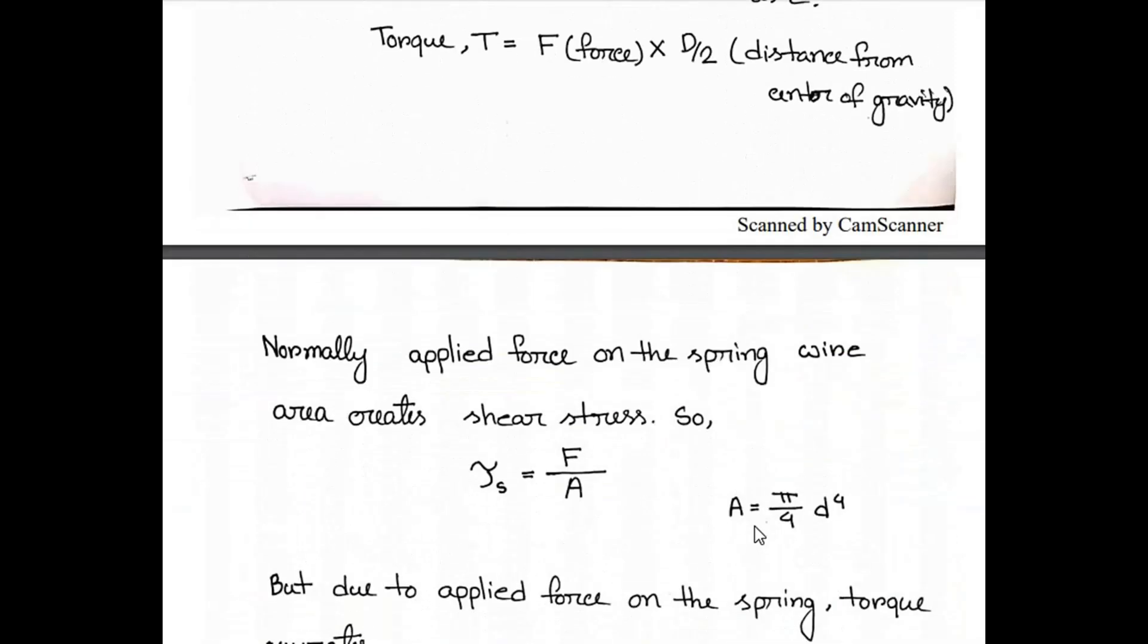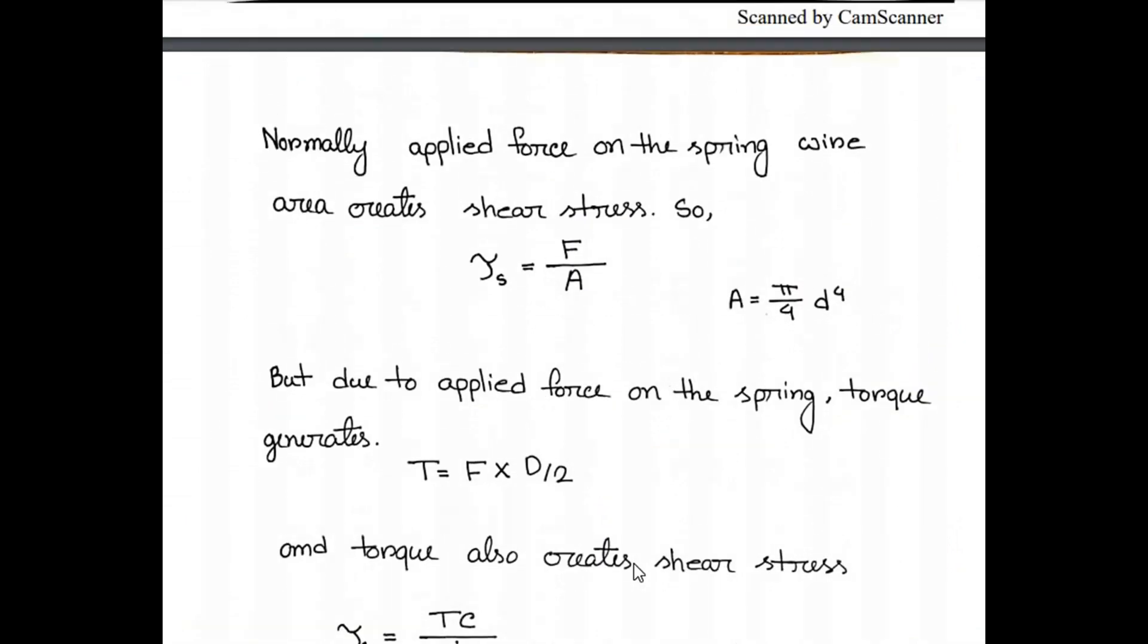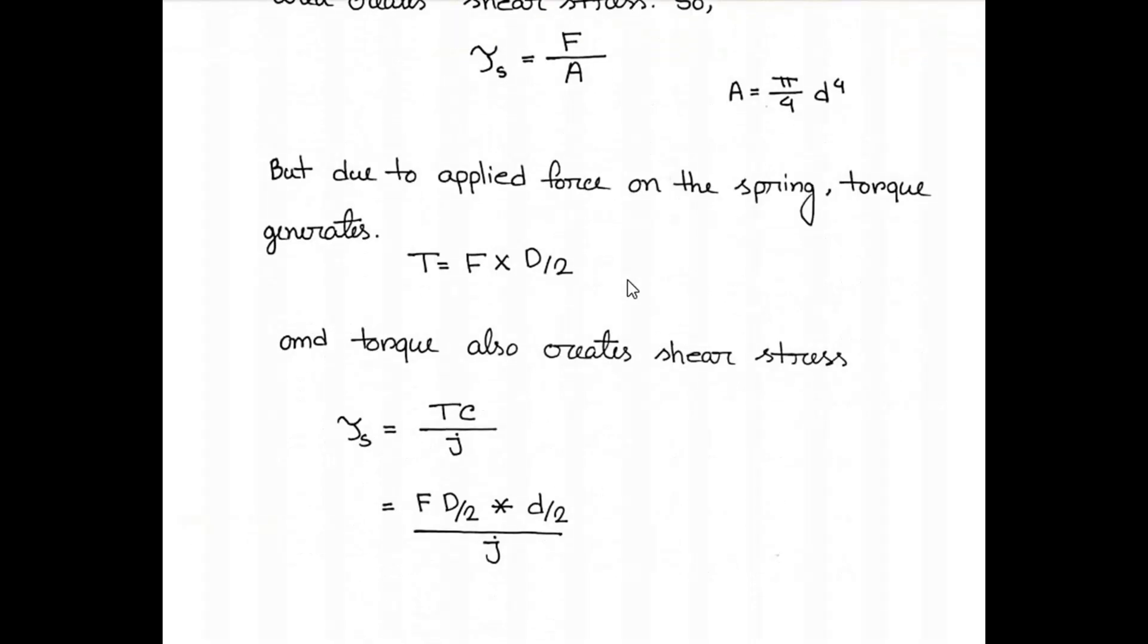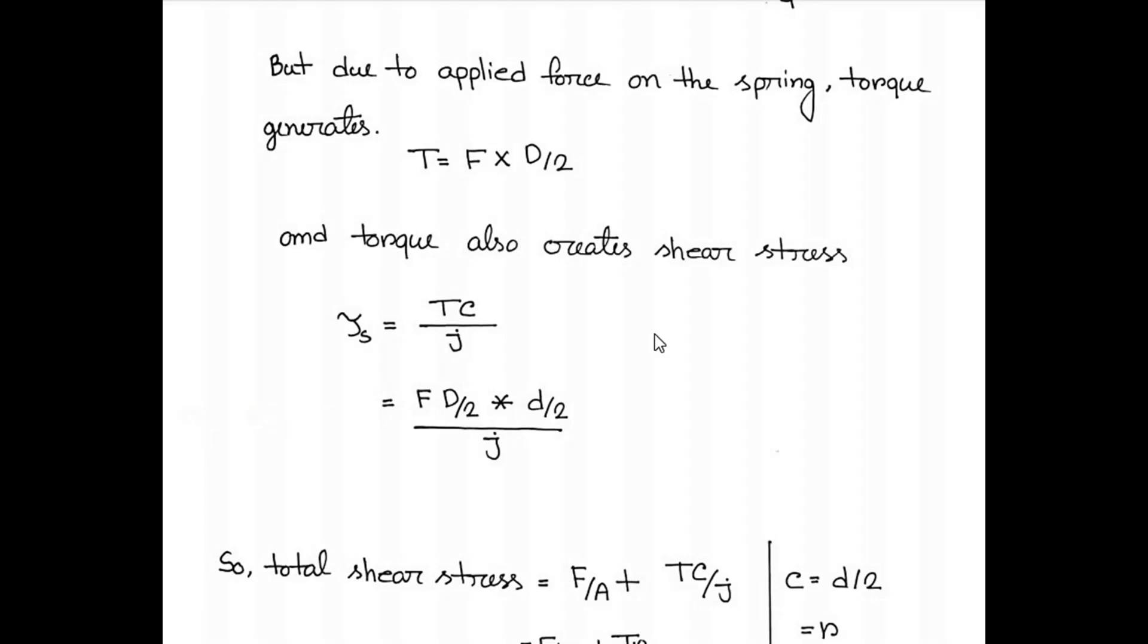The external force applied on the spring wire area creates shear stress, so tau equals F divided by A, where A is the area of the wire. Area of the wire is pi by 4 times small d to the power 4. But due to the applied force on the spring, torque generates. The torque equation is tau equals F times d by 2.